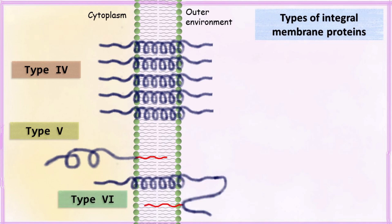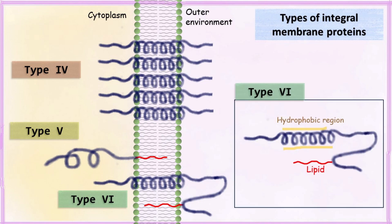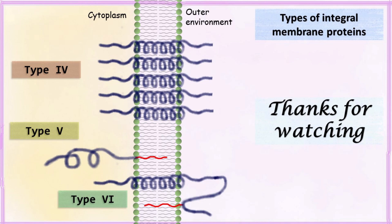In type 6 integral membrane protein, the protein has a hydrophobic structure which allows it to remain inside the membrane, and it also has a covalently attached lipid molecule which again remains inside the membrane. These were the different types of integral membrane proteins. Thank you.